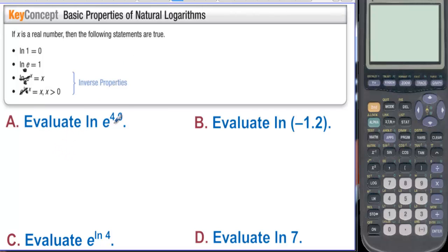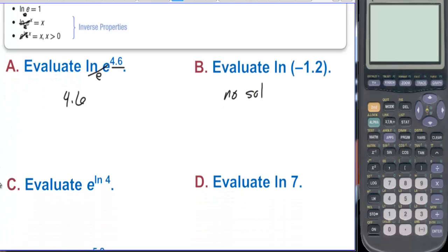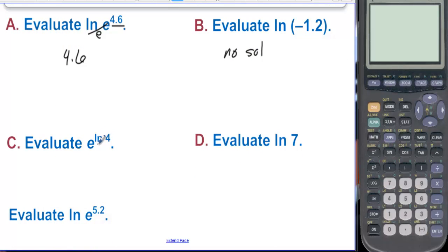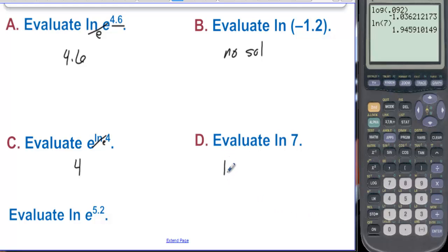Evaluate natural log of e to the 4.6. Since both bases are e, these cancel and the answer is 4.6. On letter b, evaluate natural log of negative 1.2 — it doesn't make sense to evaluate the log of a negative number, so this is no solution. Letter c, evaluate e to the natural log of 4: both bases are e, those cancel, and the answer is 4. Evaluate natural log of 7 — the calculator gives 1.946. Evaluate natural log of e to the 5.2 — that is 5.2.